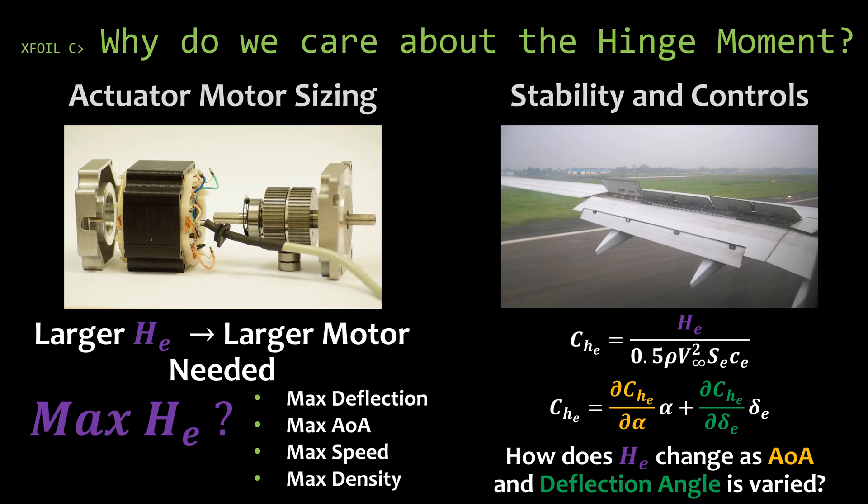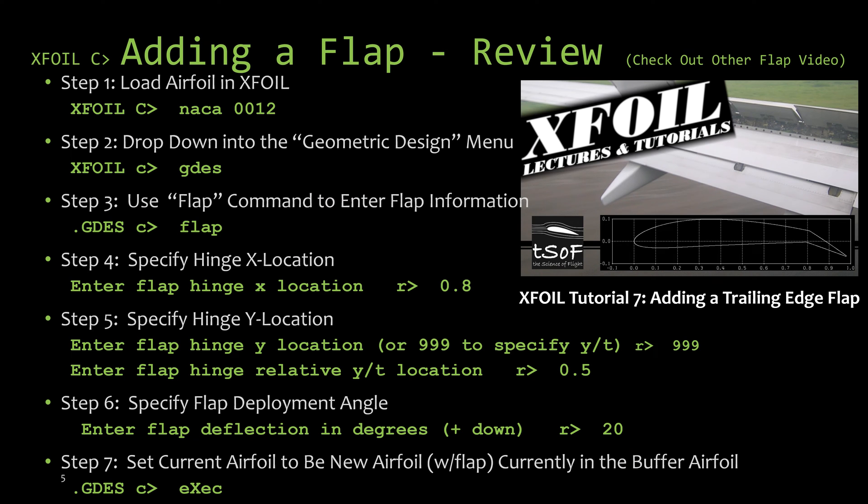But what we're trying to do is characterize how this hinge moment coefficient changes based on a change of angle of attack or deflection angle. For this case, we would be running sweeps of angle of attack or sweeps of deflection angle as we try to characterize how the hinge moment changes during those sweeps. In another video, I've already talked about adding a flap to the airfoil, so I'm just going to quickly review these first seven steps.